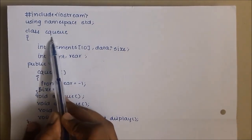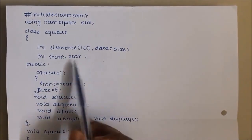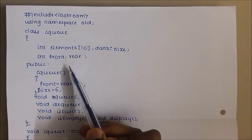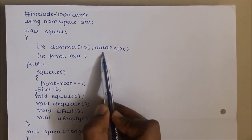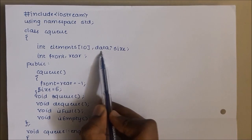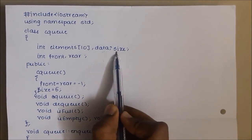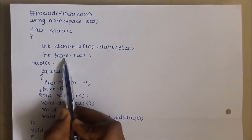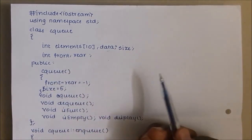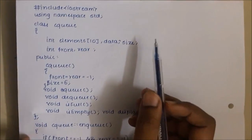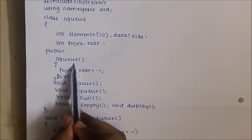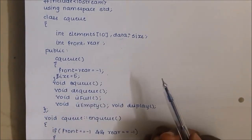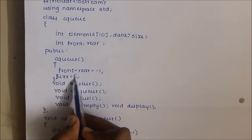Here I have taken a class named CQ which means circular queue. Inside that I have the data members: elements of 10, which is an array that will hold the elements inserted in the queue. The data being enqueued at each time is stored in a variable called data, and size is indicative of the size of the queue. I also have two variables, front and rear, which point to the front and rear of the circular queue. I have also included a constructor which initializes front and rear to minus 1 and sets the size of the queue to 5.